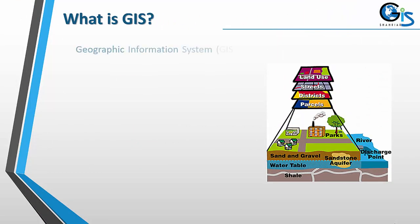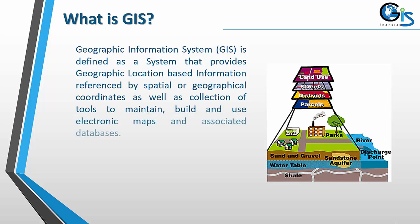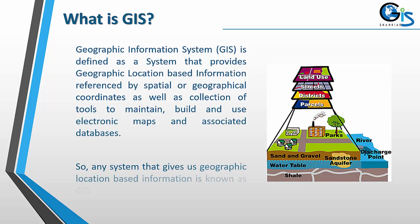What is GIS? Geographic Information System is defined as a system that provides geographic location-based information referenced by spatial or geographic coordinates, as well as a collection of tools to maintain, build, and use electronic maps and associated databases. So any system that gives us geographic location-based information is known as GIS.